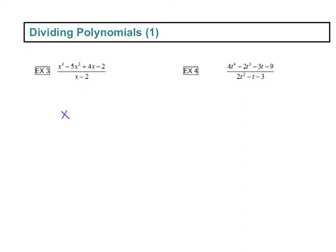Remember we're just setting this up in long division. x cubed minus 5x squared plus 4x minus 2 is being divided by whatever that denominator is, x minus 2. So now we start our long division, and again we focus on our first terms — an x and an x cubed.